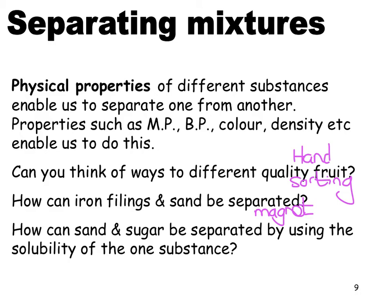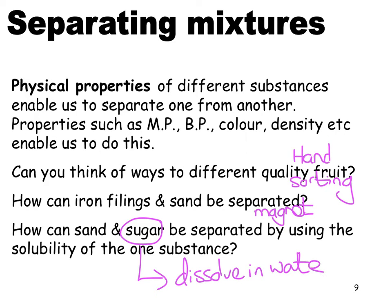How could sand and sugar be separated using the solubility of one substance? Sugar will dissolve in water. So you try to dissolve both of them in water — the sand won't dissolve but the sugar will. You can then filter them apart: the sugar goes off with the water and the sand stays behind. You could then evaporate off the water if you wanted to.